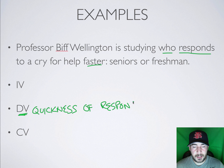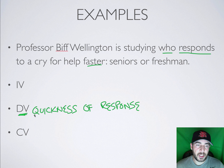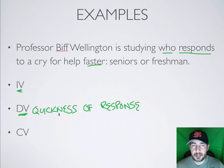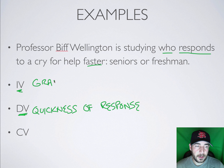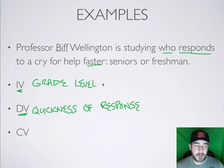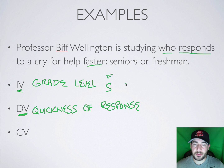So how fast are you responding to that cry — your level of response — is the dependent variable. Your independent variable is what's going to change this level of response. Whether you're a freshman or a senior, your grade level is your independent variable. We're going to take freshmen and measure their quickness of response, take seniors and measure their quickness of response, and see which one is faster.